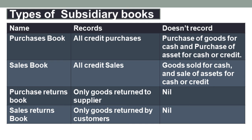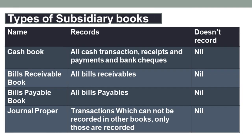Purchase returns book records only the goods returned to supplier. Sales returns book records only the goods returned by customers. Cash book records all cash transactions like cash receipts, cash payments, and also bank checks. Bills receivable book records all bills receivables, and bills payable book records all bills payables.